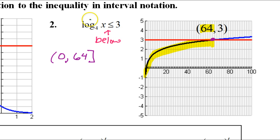Is it going to be a square bracket or round parentheses this time? It's going to be a square bracket because it's less than or equal to 3, and right at 64 is where it's equal to 3, so we want to include that value. That's the answer: 0 to 64. That's how you can immediately get the answer from the graph without doing any calculations.